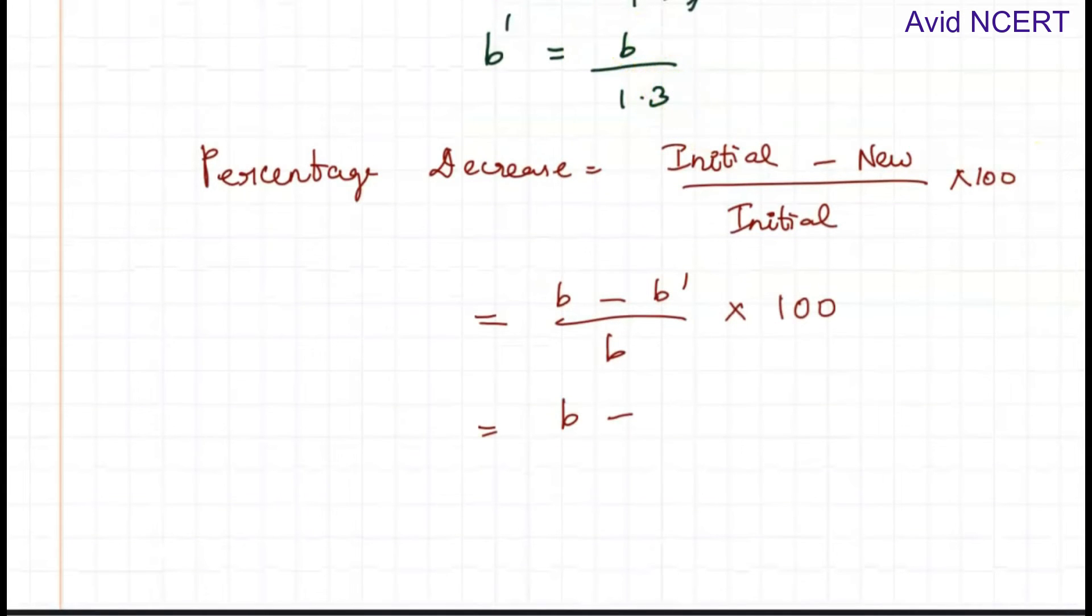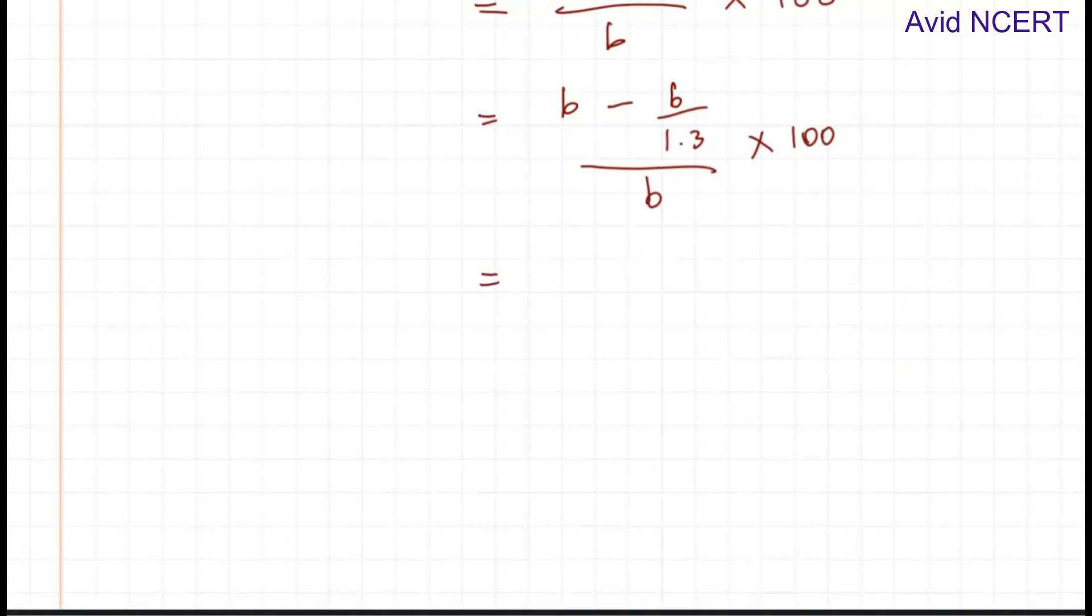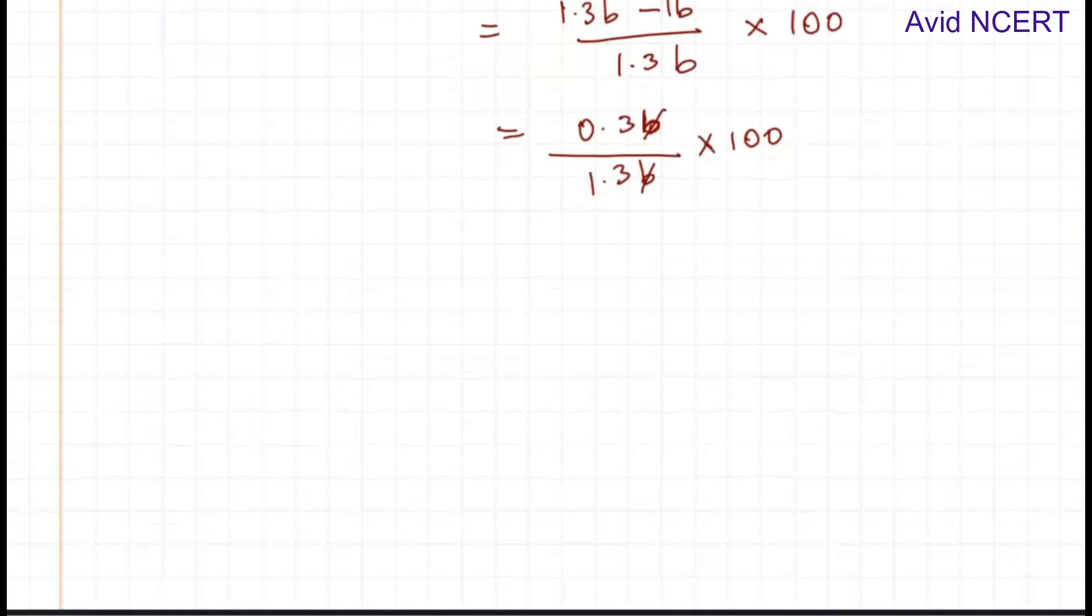Taking the LCM, which is 1.3, we get 1.3b minus b times 100, which equals 0.3b divided by 1.3b times 100. B gets cancelled, so this equals 0.3 times 100, which is 30 divided by 1.3.